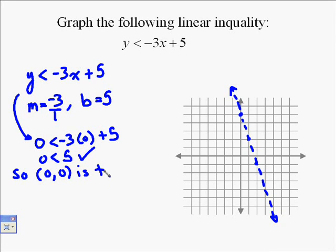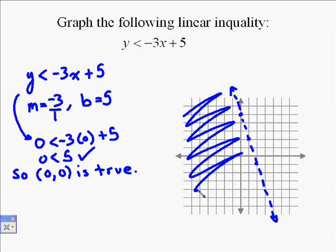So our solution set is all the points to the left of the line, which we designate by shading that region, which shows that any point in that region is a part of the solution.